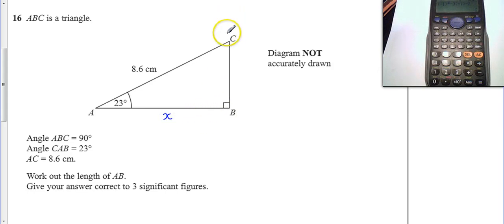So what I'm going to do straight away is label all of my sides. So with the angle 23, this is my opposite, this is my adjacent, and then this is my hypotenuse.